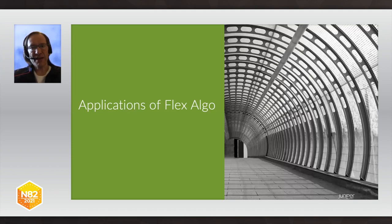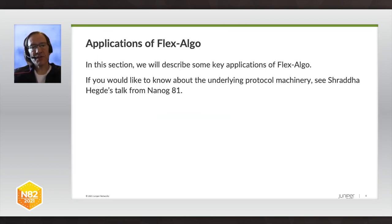BGP Classful Transport is another topic for today, but it's not in this diagram, because this diagram is talking more about what happens within a given domain. BGP Classful Transport is about how we glue different domains together. I'll go on to the first topic I'm going to cover, which is applications of Flex-algo — specifically the applications and use cases. If you want to know more about the underlying protocol machinery, how Flex-algo definitions are communicated using the IGP, I'd refer you to SRADA's talk from LANOG 81.